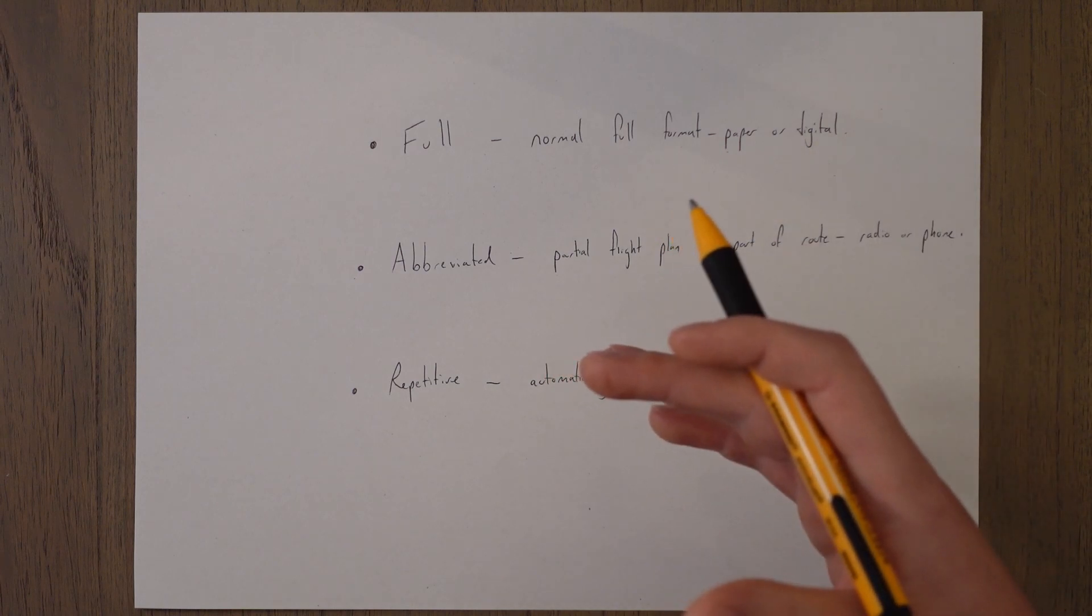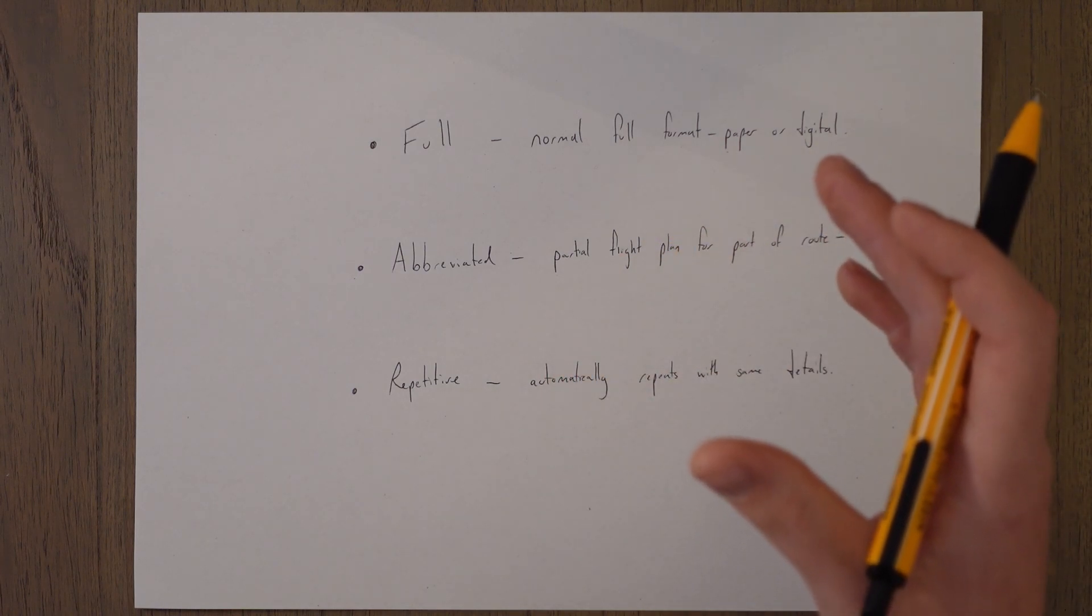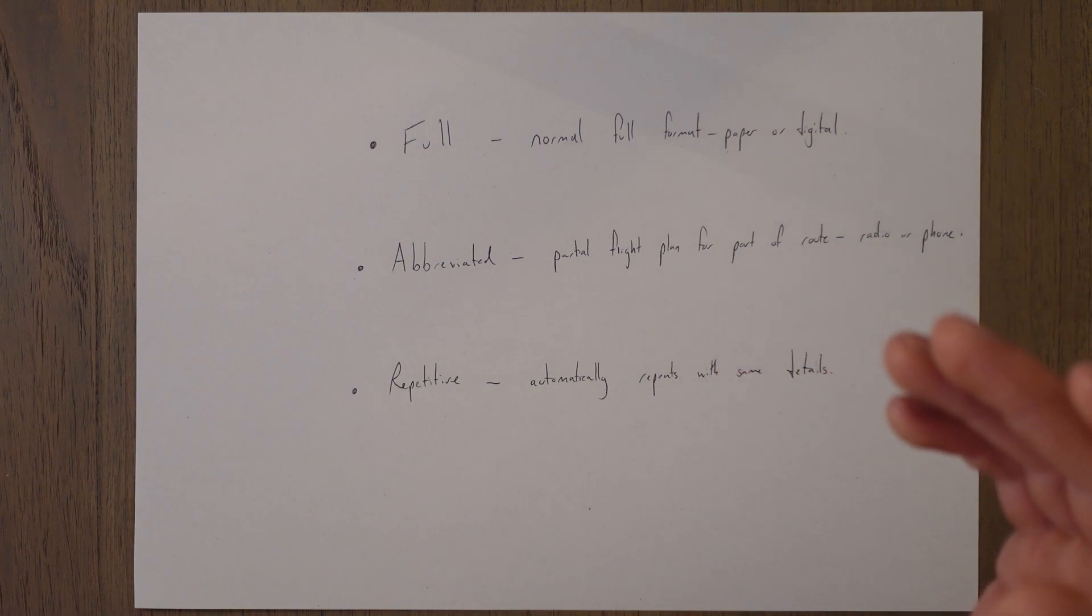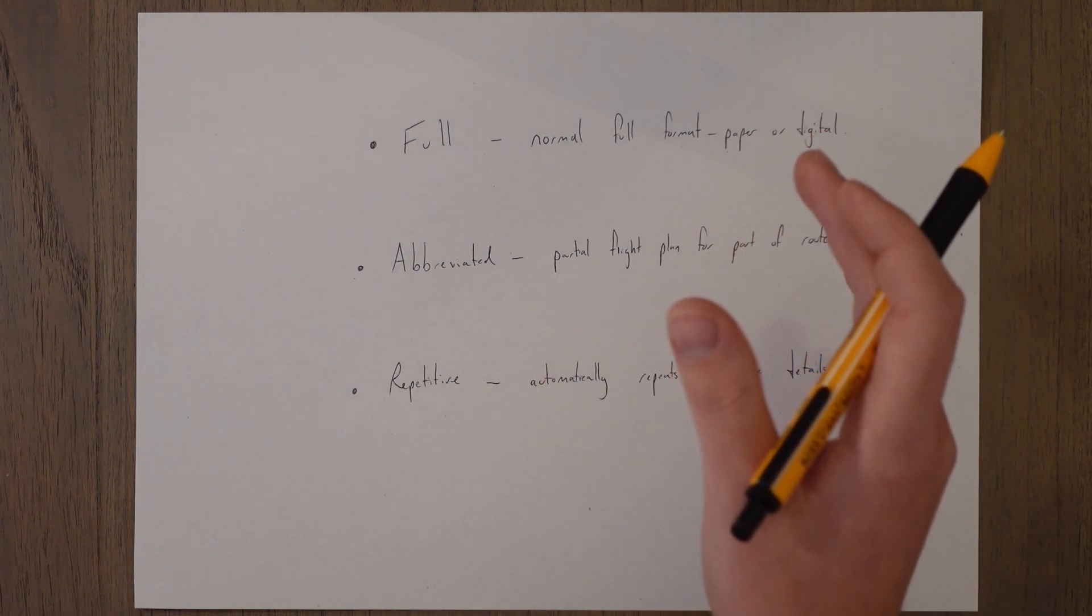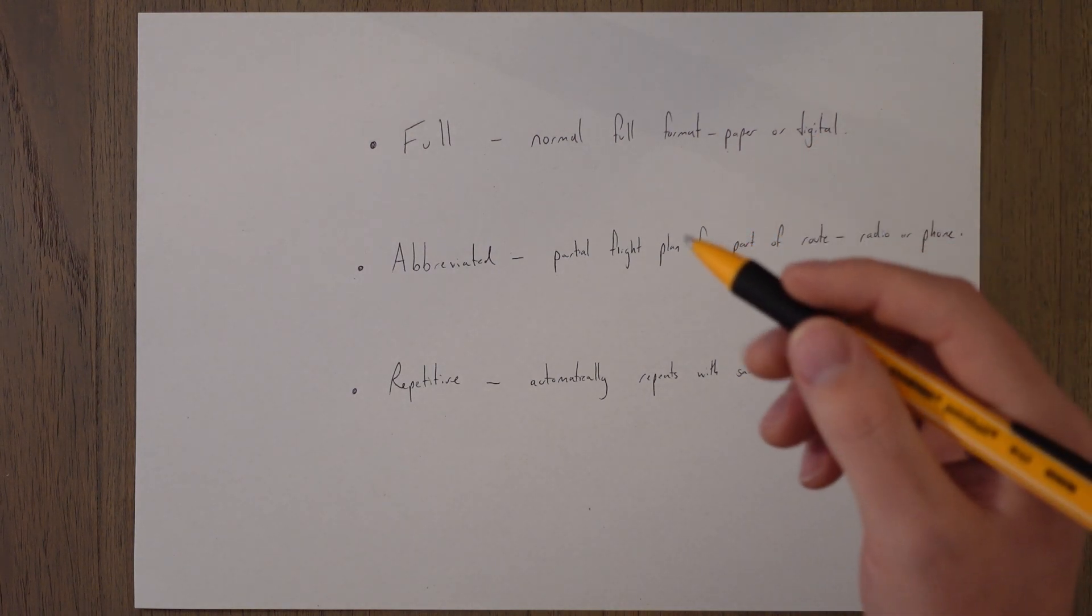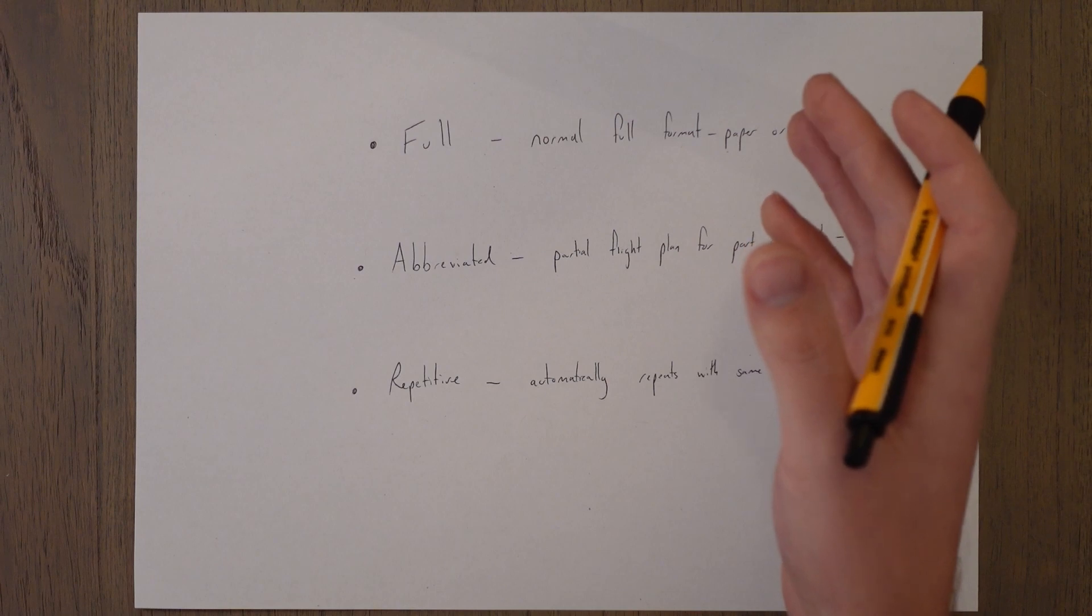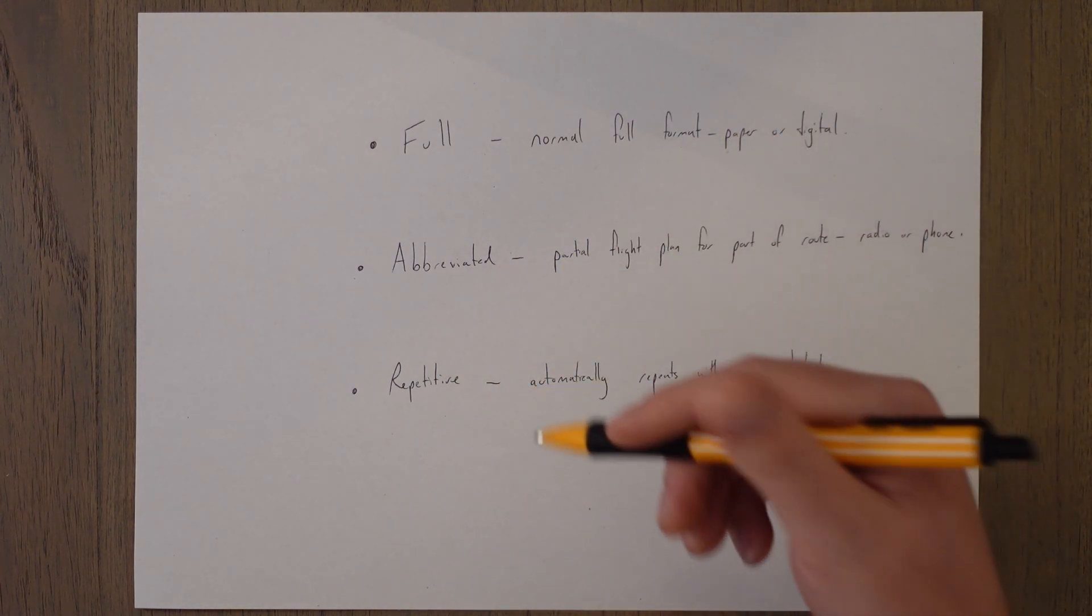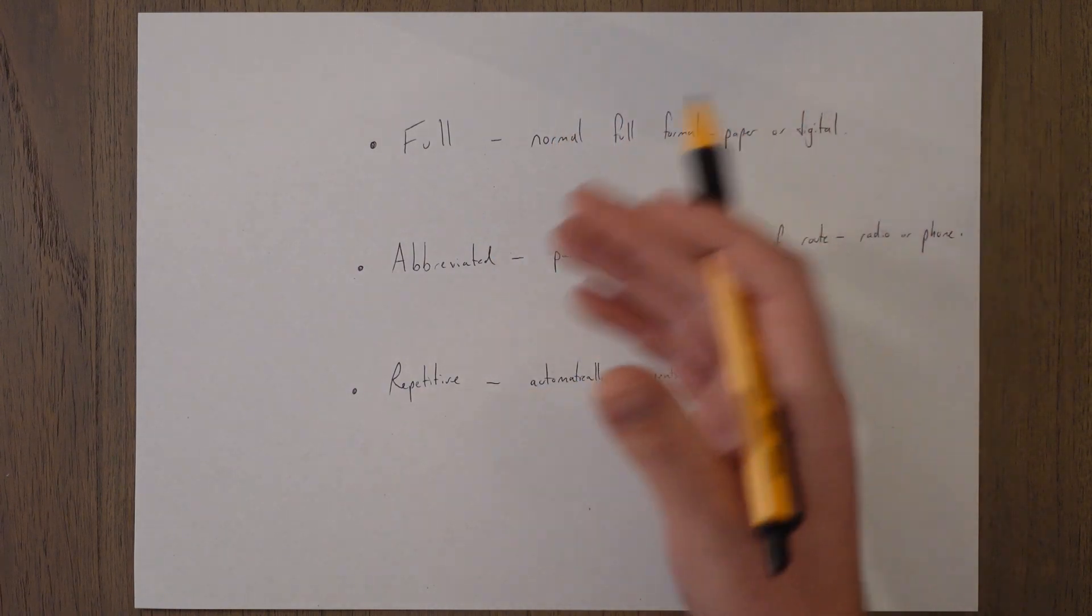And once the flight plan is in and submitted that is what you would then call the filed flight plan. If there are any amendments by air traffic control in the future then you would call that your current flight plan. So say they wanted to amend our routing, they might say when you're flying we need to make some changes to your filed flight plan, instead go from this waypoint to this waypoint. Then you would read it back and your new current flight plan would be noted with those changes so it would be different from what you actually submitted to air traffic control.